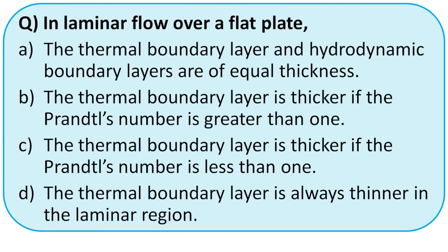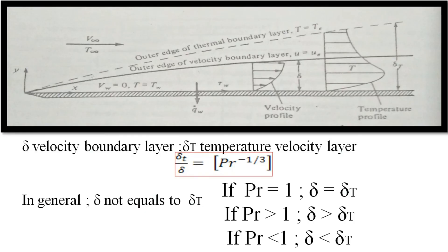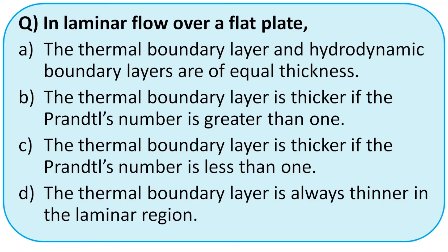For laminar flow over a flat plate, the relationship between thermal boundary layer δ_t and hydrodynamic boundary layer δ is related to the Prandtl number Pr. When the thermal boundary layer thickness is greater, the Prandtl number is less than 1. So the right option is option C.